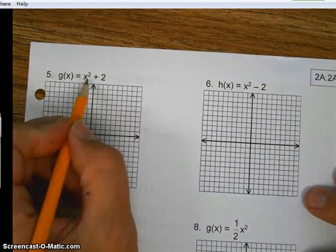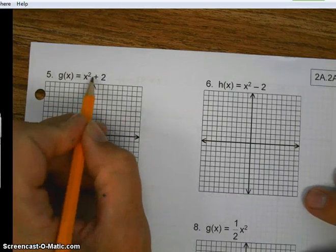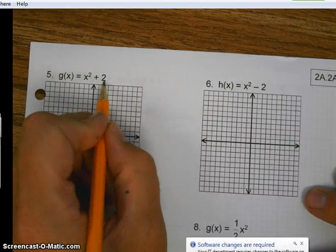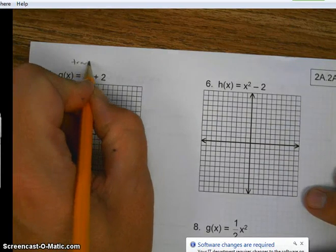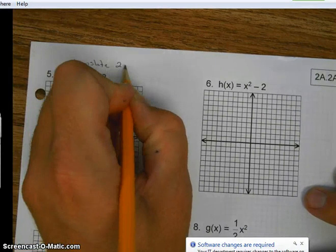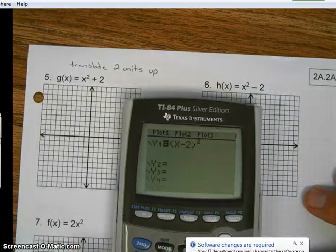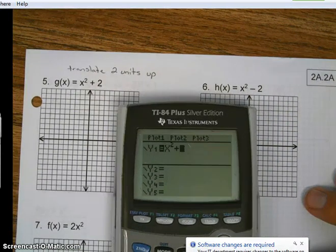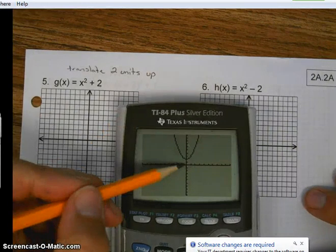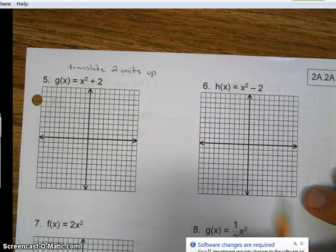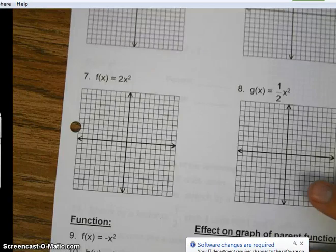Next transformation is we're going to take the parent. Remember, the parent is x squared. Y equals x squared. And this time there's no parentheses. So this value is going to shift, or I should say translate, two units up. Let's take a look at that. So we have x squared plus two. Remember what the parent looks like. You see how the vertex got moved two units up? Perfect. So what's going to happen here? That's for you to tell me. What's going to happen on number six?